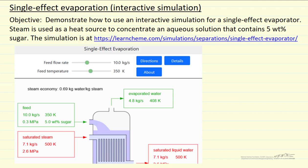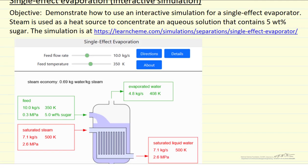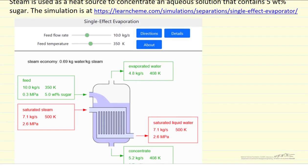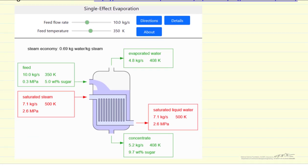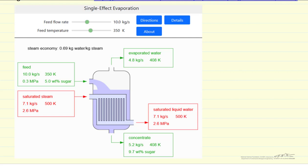I'm going to describe how to use an interactive simulation that models a single-effect evaporator. The idea is we're concentrating a solution of 5% sugar. Let's look at a snapshot of this simulation. We're concentrating a solution from 5% up to 9% by evaporating water.